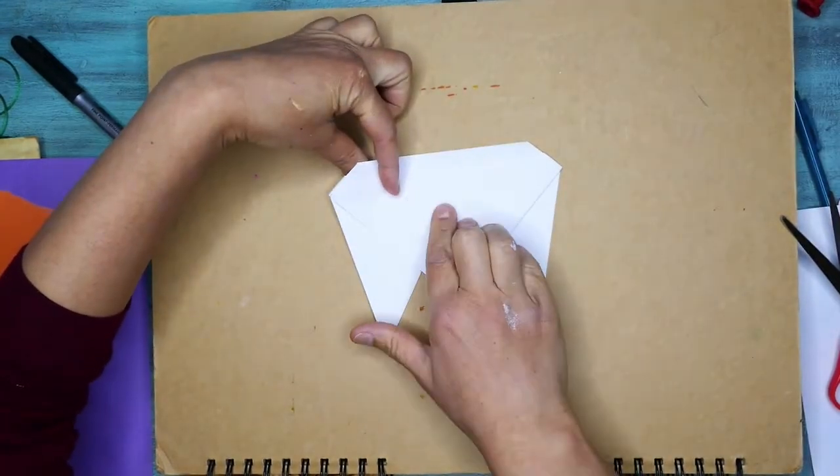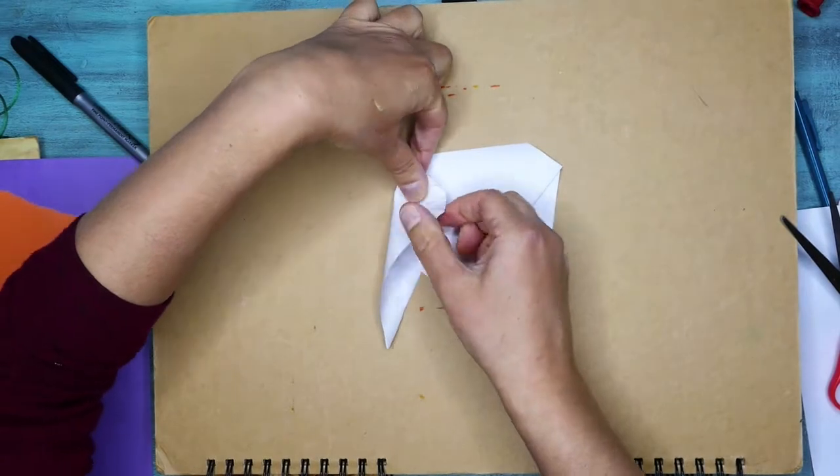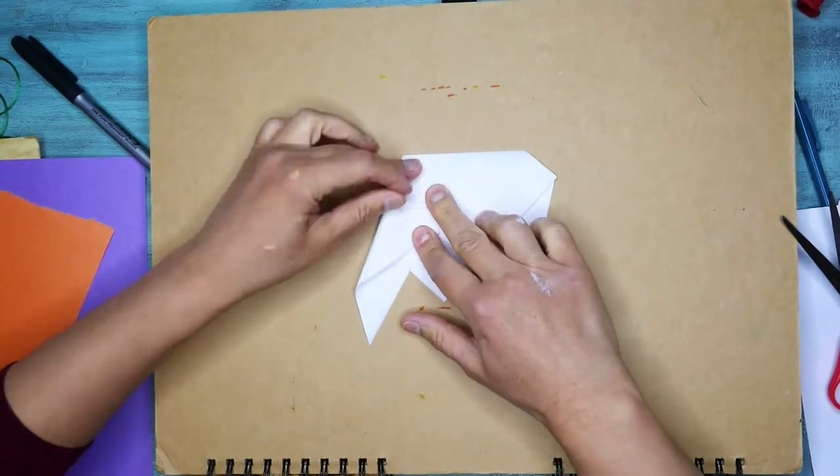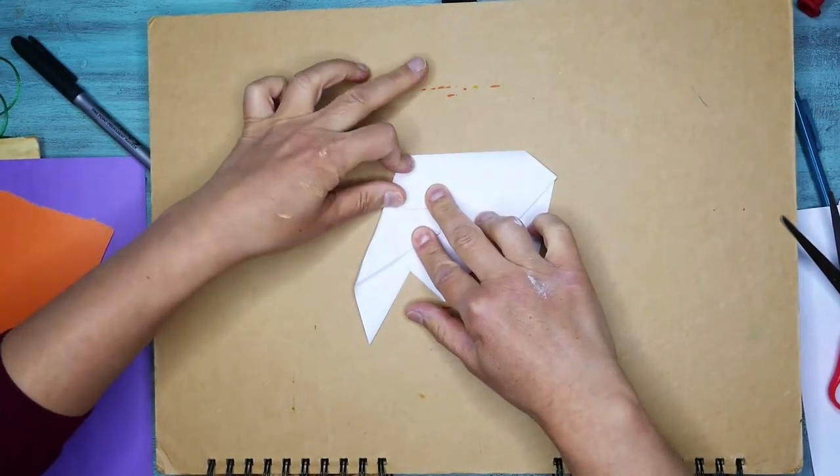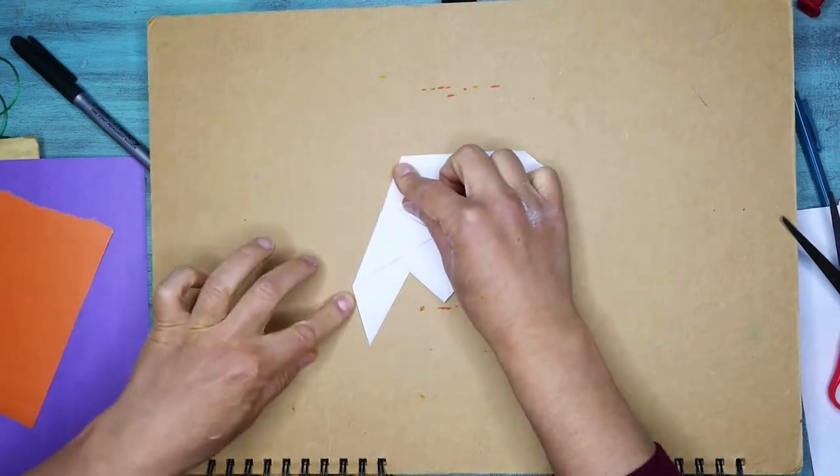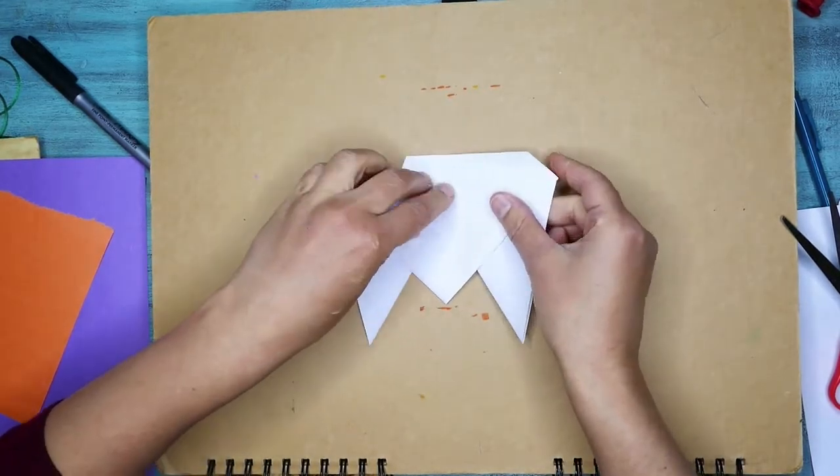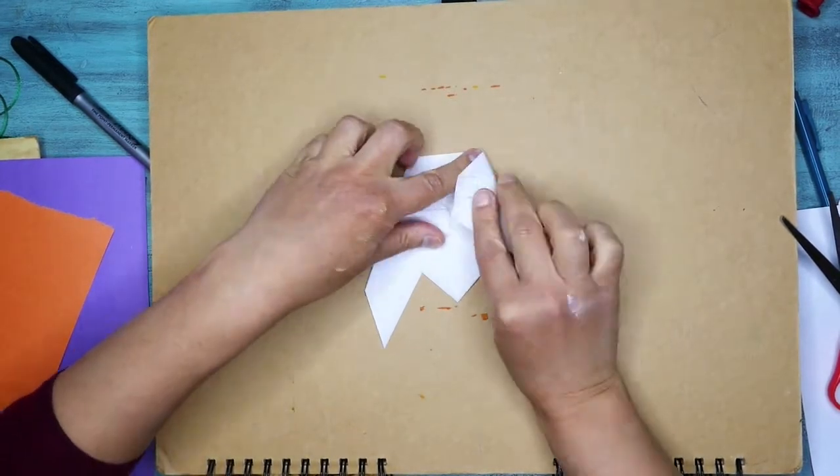Now what I want to do, you can see I have those straight lines right there on the corners. I'm going to bring that right into the central line. So you're going to do that on both sides. You want to make sure that you're very careful here and bring it to the very middle.